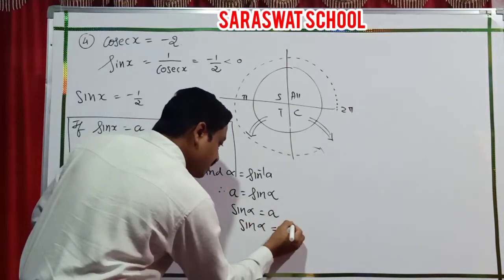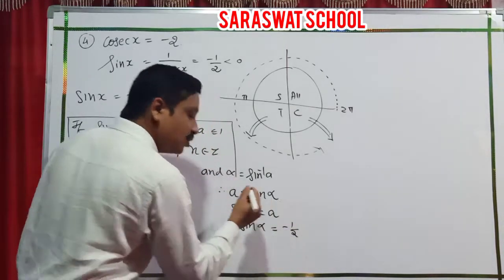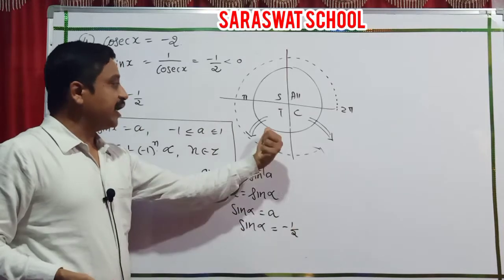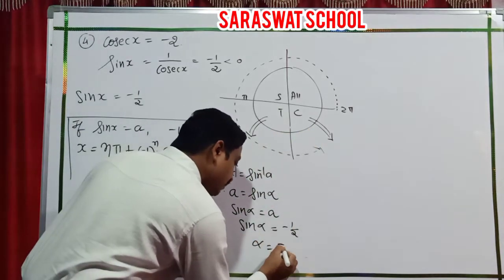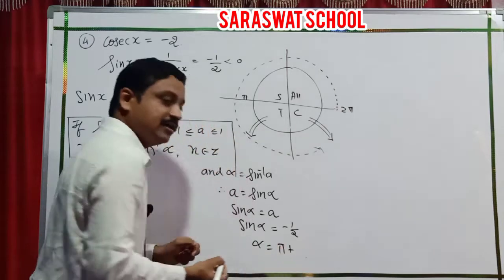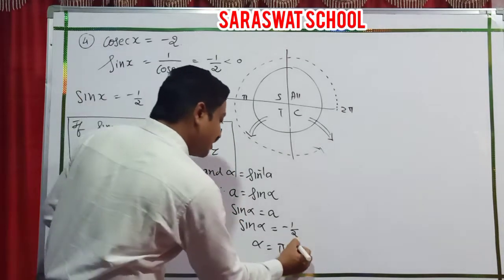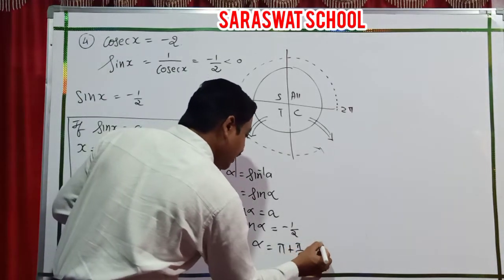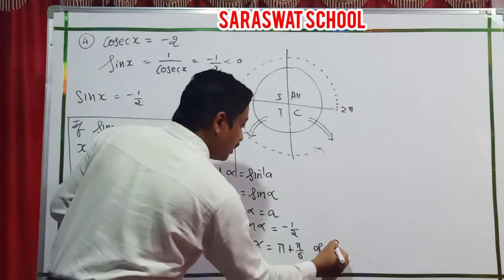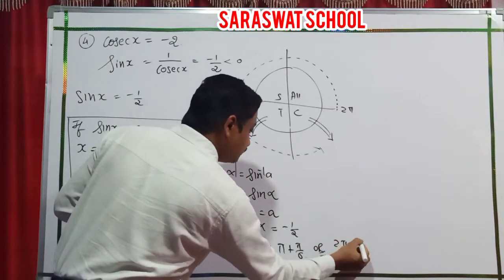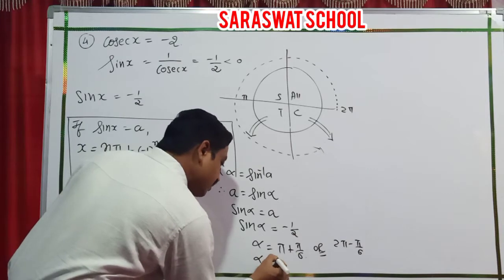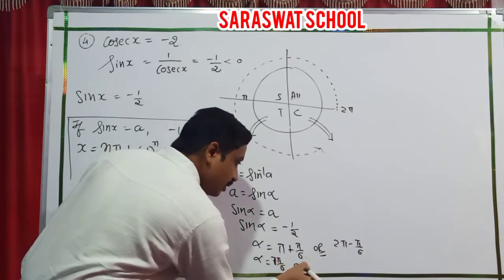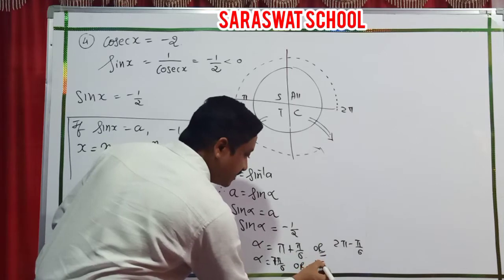Sine is negative in the third and fourth quadrants. When sine is half, the angle is 30 degrees — pi by 6. In the third quadrant: pi plus pi by 6 gives 7 pi by 6. In the fourth quadrant: 2 pi minus pi by 6 gives 11 pi by 6. These are 210 and 330 degrees respectively.